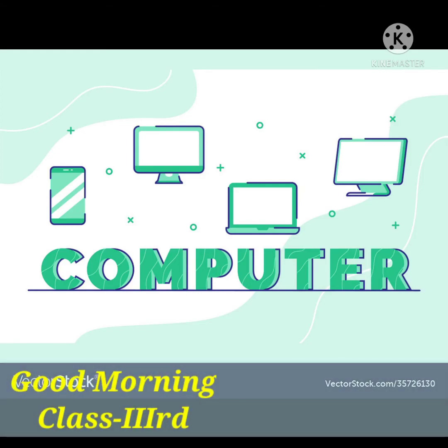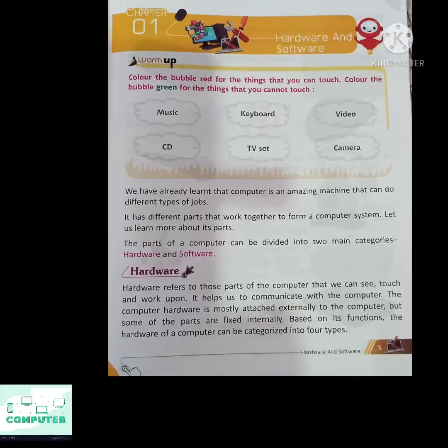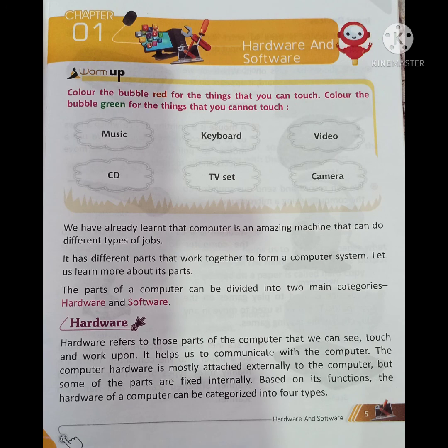Good morning, class 3rd. Welcome to the online computer class. Today we start chapter 1: Hardware and Software. We have already learned that a computer is an amazing machine that can do different types of jobs. It has different parts that work together to form a computer system. The parts of a computer can be divided into two main categories: Hardware and Software.